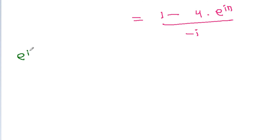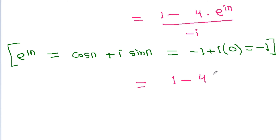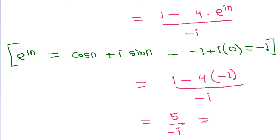Now e^(i*pi) equals cos(pi) plus iota times sin(pi), which is minus 1 plus iota times 0, so it equals minus 1. Therefore we get 1 minus (minus 4) which is 5, divided by minus iota. Since 1 divided by minus iota equals iota, the value is 5 iota.